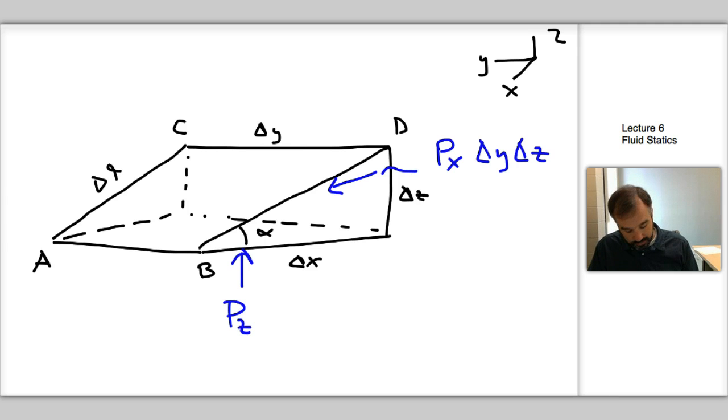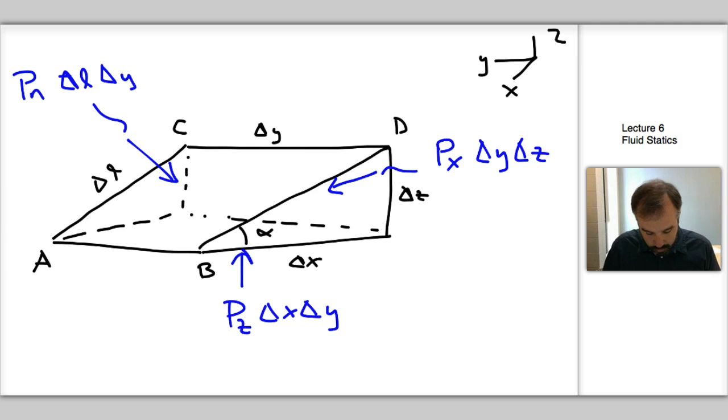And again, we need to multiply that by an area. In this case, it's delta X, delta Y to get a force. And then we also have one acting normal here to the incline, and we'll call that one PN. And we're going to need to multiply that by delta L, delta Y. And then there's one more force that we can't neglect, and that's the weight. So we have W acting down, and we'll write out the expression for that when we get to that point.